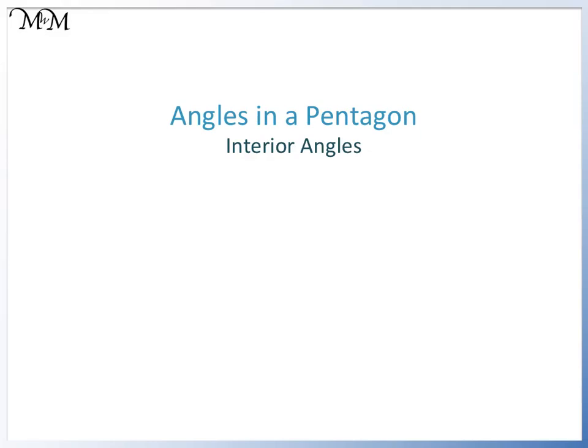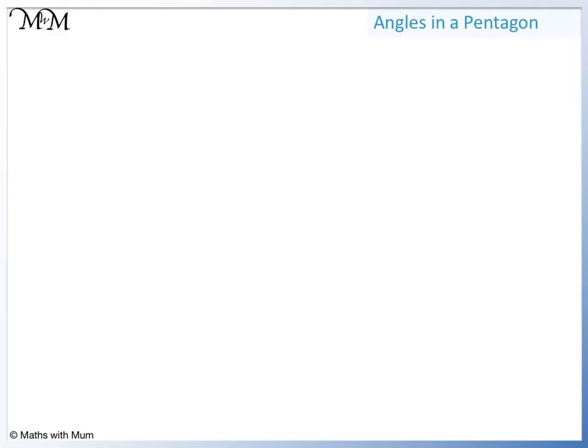Hi and welcome to our lesson on interior angles in a pentagon. To find the sum of the interior angles in any polygon, we simply start with the number of sides, subtract 2, and then multiply by 180 degrees.